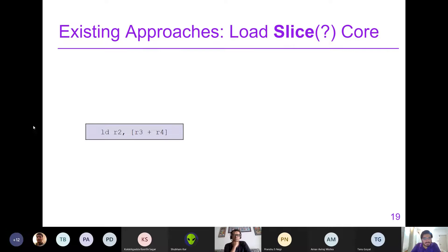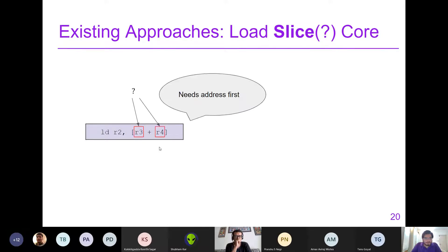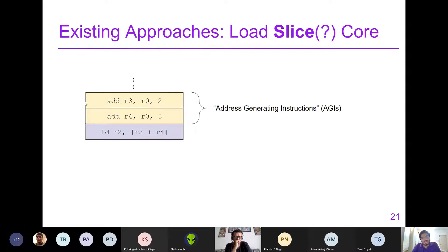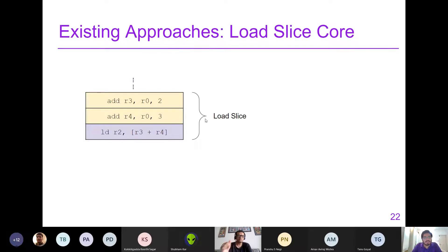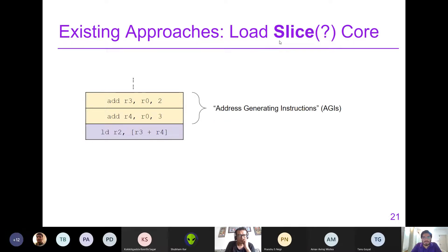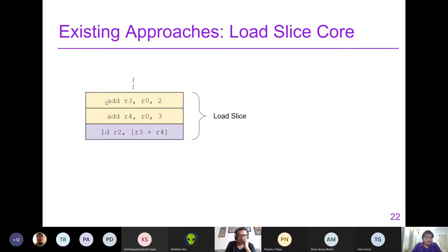To prioritize a memory access, we need to give it an address. To execute a load instruction, it needs an address — in this case given by the sum of R3 and R4. The instructions that compute R3 and R4 are called address generating instructions (AGIs). These AGIs combined together with the load instruction are called the load slice. A load slice is the set of address generating instructions combined with the load.